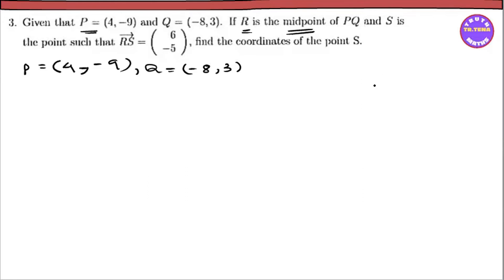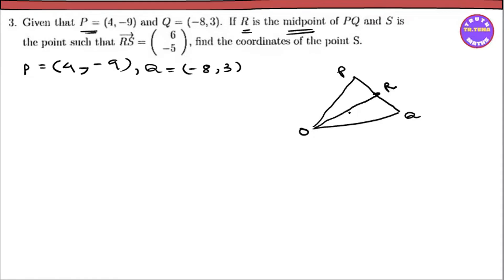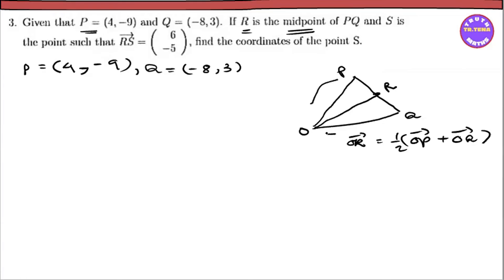The midpoint is PQ. The position vector is the same. The midpoint formula is: OR vector equals one-half of OP vector plus OQ vector. We can see this using the section formula as well — it gives one-half times OP vector plus OQ vector.